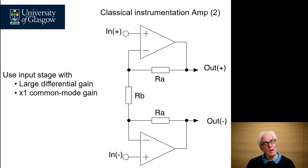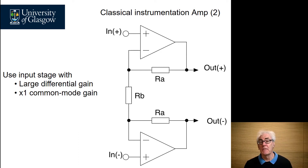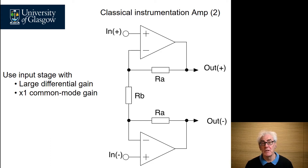By applying resistors around the buffer amplifiers, we can configure a circuit that has a large differential gain, but retains a low common mode gain — in fact only times one. This is beneficial for our instrumentation amplifier performance.